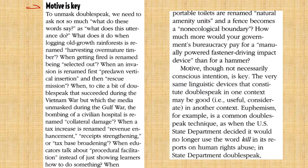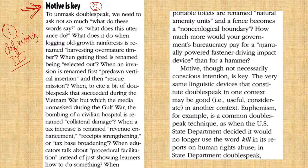Motive is key — we're getting a header here. Anytime we get a header, we know the author is moving to another point. Up until now, point one has sort of been about defining doublespeak — telling us what it is. Here they're talking about motive and why that's key. So this is probably point number two. To unmask doublespeak, we need to ask not so much 'what do these words say' as 'what does this utterance do?' Here's the key question. If we want to be good critical readers, we need to look at what the utterance does.